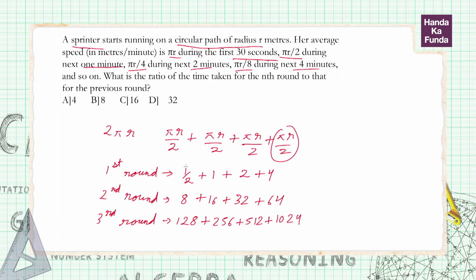What I'm trying to say is half is becoming 8—half into 16 is 8. 8 is becoming 128—8 into 16 is 128. Take up any value randomly: 32, 32 into 16 is 512.